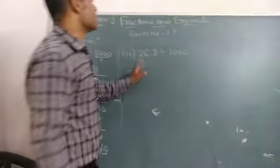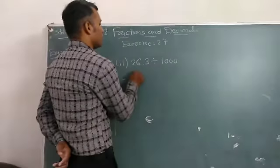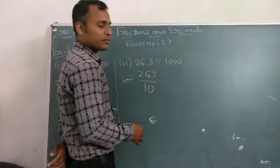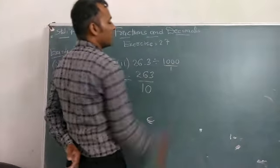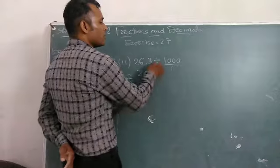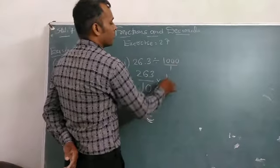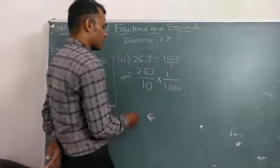So now, next number is 26.3 is equal to 263 upon 10. 1000 has 1 in denominator. So now, division symbol is converted into multiplication. When we convert, 1 upon 1000.